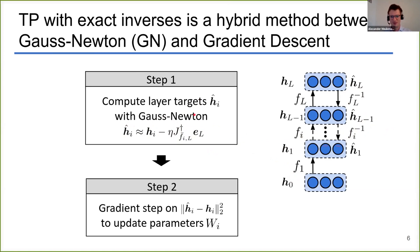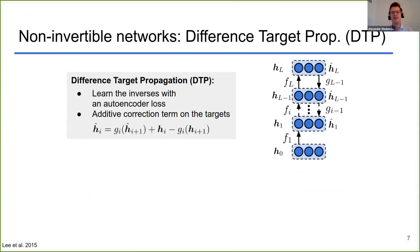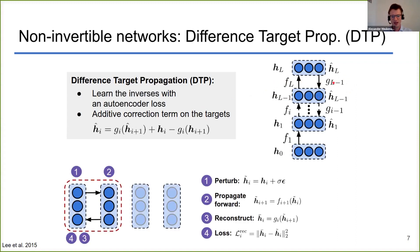Now usually, however, the networks are non-invertible, which led to the development of difference target propagation. So in difference target propagation you don't have the exact inverses anymore available, but you learn your inverses with an autoencoder loss. This autoencoder loss operates layer-wise, and for training each feedback mapping you send a perturbed activation one layer forward and one layer backward again, and then you compare the reconstructed sample with the original sample.